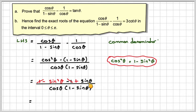And therefore, on the numerator, we're going to have sine theta minus sine squared theta, divided by cos theta, 1 minus sine theta.